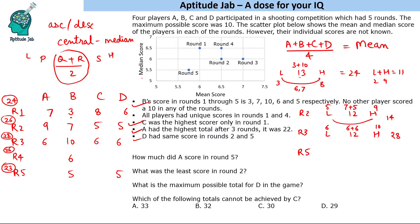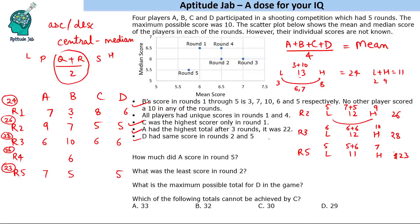For Round 5, the total is 23 and the median is 5.5, so the central two scores sum to 11, and the lowest + highest = 12. We know D scored 5 and B scored 5, so one of the central values is 5 and the other is 6. That accounts for 16 points, leaving highest = 7 (since 23 - 16 = 7). Since C was the highest scorer only in Round 1, A gets 7 and C gets 6 in Round 5.